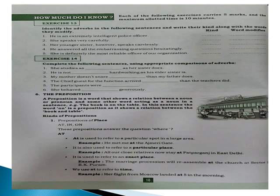'All close relatives now stay at Pratap Ganj in East Delhi' — 'at' refers to a particular place. 'At' is also used to refer to an exact place: 'The marriage procession will be reassembled at the church at Sector 2, RK Puram.' We also use 'at' to refer to time: 'Her flight from Moscow landed at 5 in the morning' — here 'at' gives the exact time.